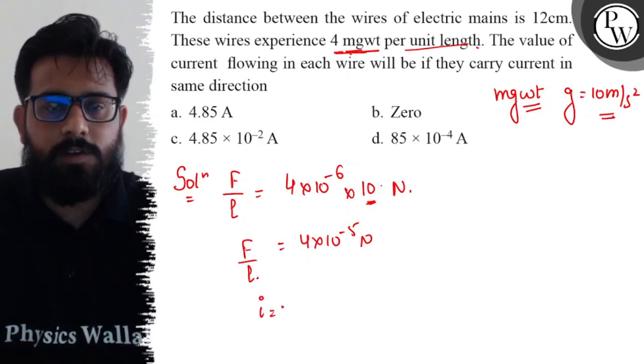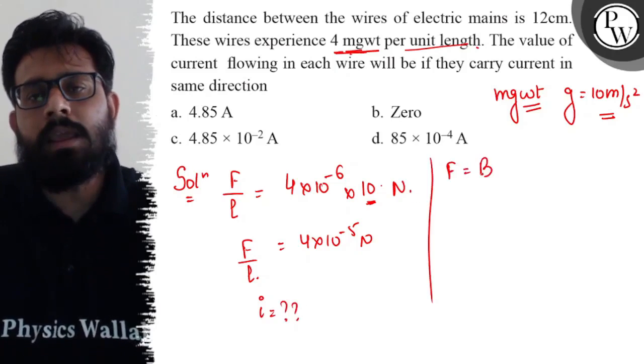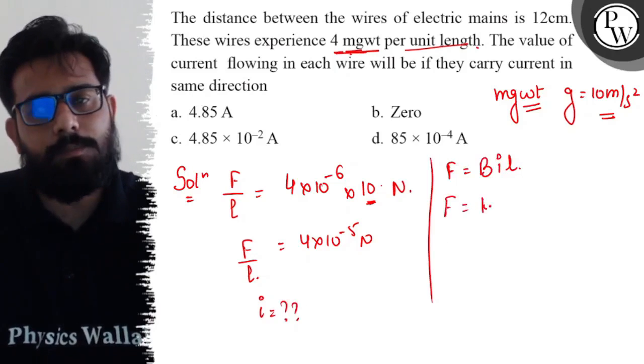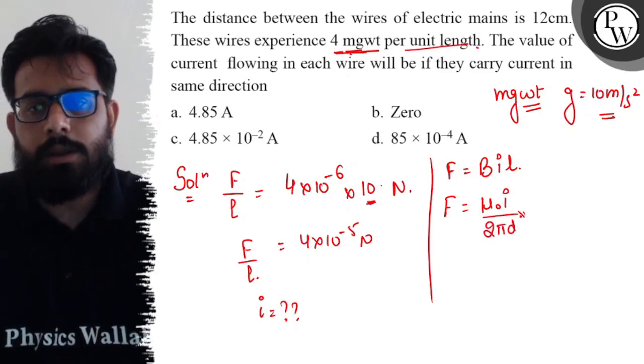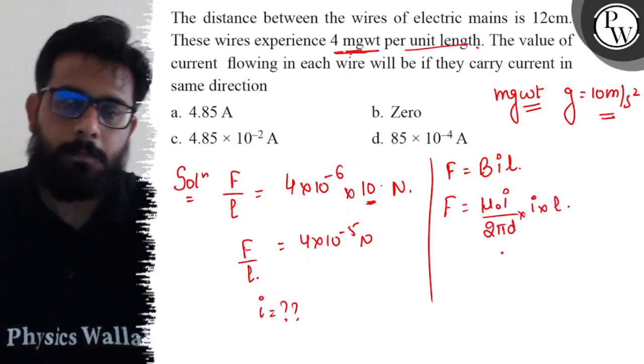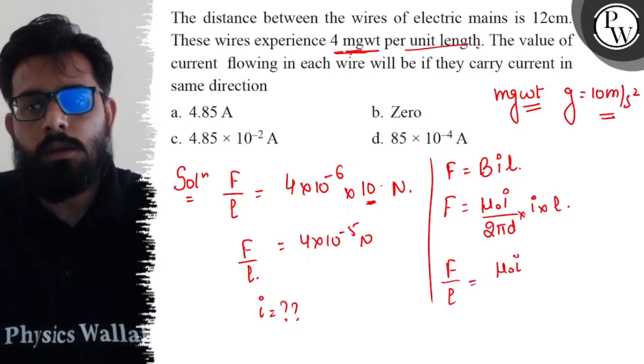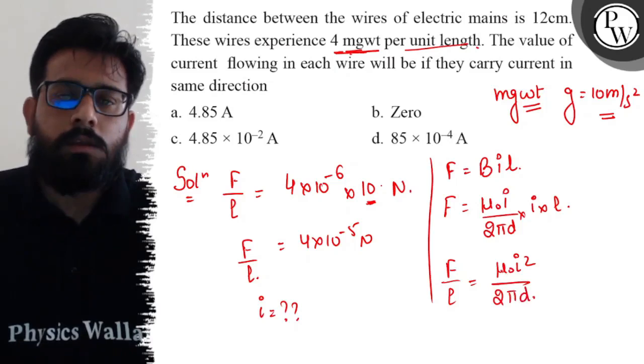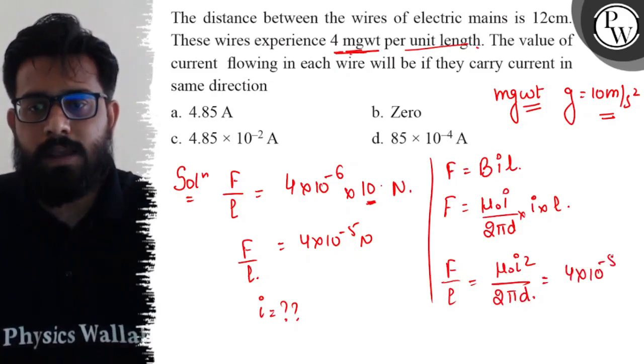We have F = BiL. Now, F/L comes out to be μ₀i²/(2πd). The value of F/L is 4 × 10^-5. Let's solve this on the next page.